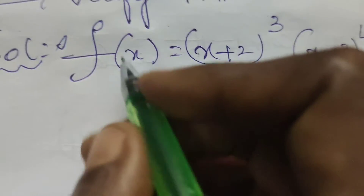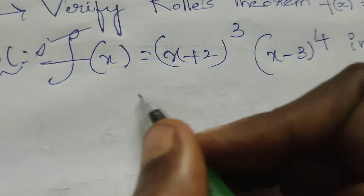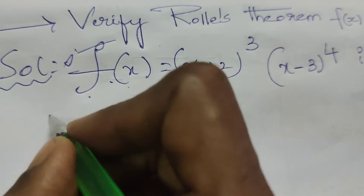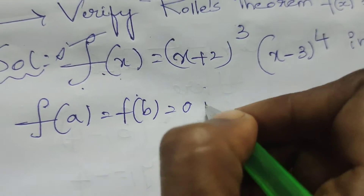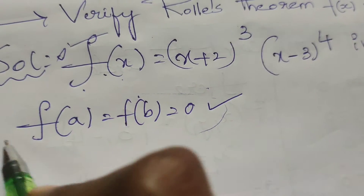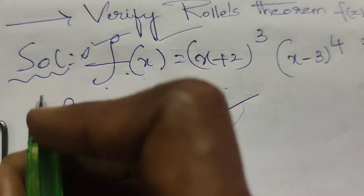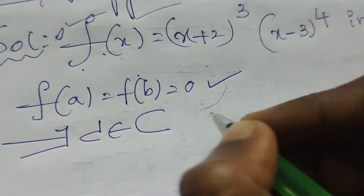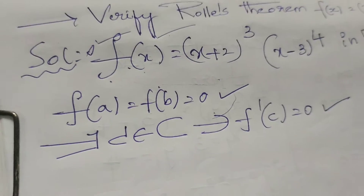Rolle's Theorem conditions: f(x) is continuous on the closed interval [a, b], f(x) is derivable on the open interval (a, b), and f(a) = f(b) = 0. If these three conditions are satisfied, then there exists c in (a, b) such that f'(c) = 0.